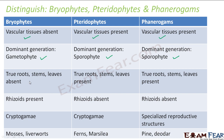In bryophytes, true roots, stems, and leaves are absent — they have stem-like and leaf-like structures but not true roots and leaves. In pteridophytes and phanerogams, true roots, stems, and leaves are present. Rhizoids are present in bryophytes — small hair-like structures that absorb minerals and water from the soil — but rhizoids are absent in pteridophytes and phanerogams. Bryophytes and pteridophytes are cryptogams, meaning they have hidden reproductive systems not visible externally. In phanerogams, specialized reproductive structures — like male and female cones in gymnosperms and flowers in angiosperms — can be seen externally.